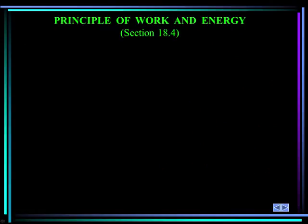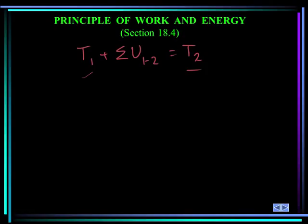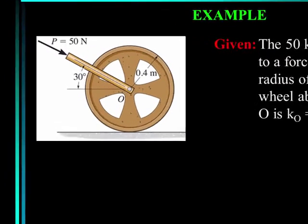Now we move into section 18.4, the principle of work and energy. The kinetic energy at state 1 plus the summation of all work done between states 1 and 2 equals the kinetic energy at state 2. For general planar motion, kinetic energy has both translational and rotational components, and the work includes moments acting over rotational distances and forces acting over linear distances. Being a scalar equation, it can be applied to a system of rigid bodies by summing contributions from all bodies.